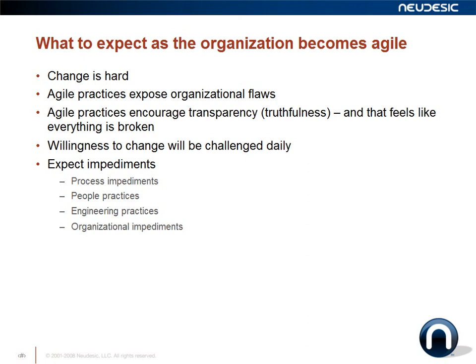Agile practices encourage transparency and truthfulness. Many times we are not used to being truthful about our project status — you'll be on schedule up to the day you're supposed to deliver, then announce you're a month or two behind. In agile, you talk about what's not working and what blocks and impediments you have very rapidly. Because of that truthfulness, many times it feels like everything is broken, which can create a sense with management that you're airing dirty laundry. But for agile to work, you have to understand the blocks and impediments facing the team so you can address and remove them.